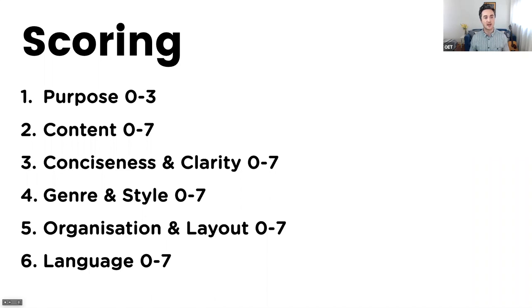So how are you scored? Well, you're scored on six criteria — six things. The first one is called purpose, and you'll get a score of 0, 1, 2, or 3 for purpose. You're then scored on content, conciseness and clarity, genre and style, organisation and layout, and language. Each of those are scored from 0 to 7. So we're going to go through all of these one by one. Let's first focus on purpose.